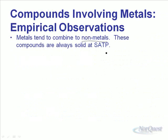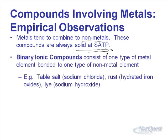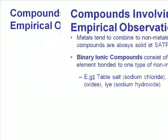Metals tend to combine with non-metals, and these compounds are always solid at SATP. They're called binary ionic compounds, and they consist of one type of metal bonded to one type of non-metal. There are lots of examples: table salt, rust (iron oxide), and lye (sodium hydroxide). The first name is always the metal name, and the second name is usually the non-metal. This particular compound consists of sodium ions and chlorine ions.